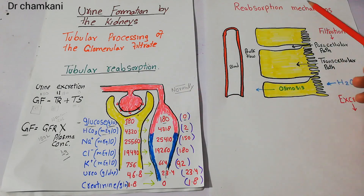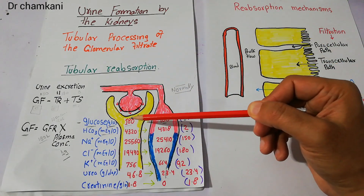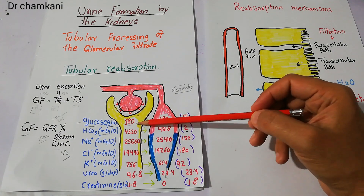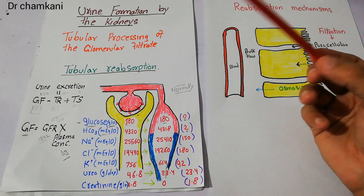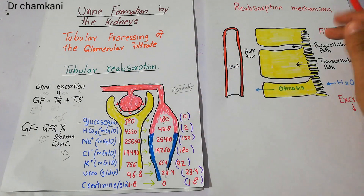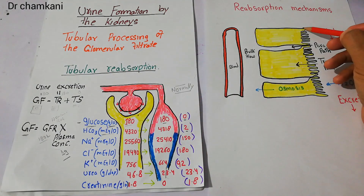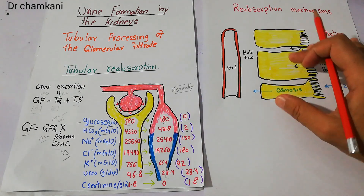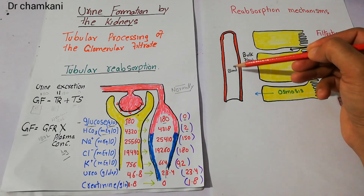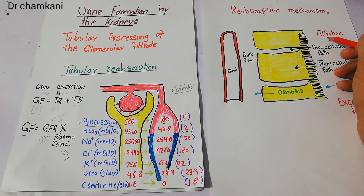We will now focus on the reabsorption mechanisms — how different substances get reabsorbed from the tubule into the peritubular capillaries. If we dissect this area under the microscope, the different cells in the tubule look like this. The inside of the tubule has cells connected to each other, and here we have the peritubular capillaries. Filtration is occurring here, then reabsorption occurs, and the remaining filtrate is excreted as urine.